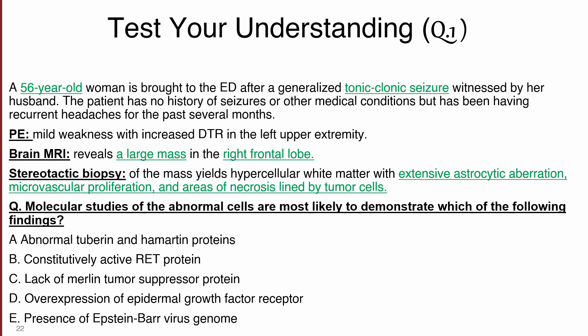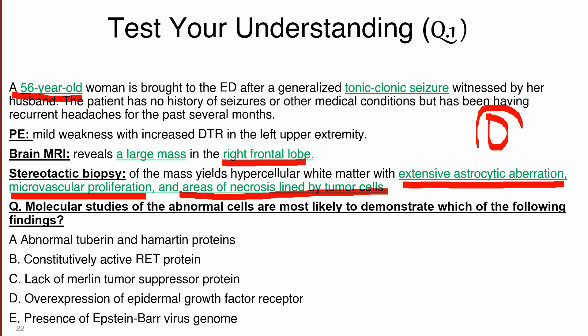Case 1: A 56-year-old woman presents with a first-time generalized tonic-clonic seizure, recurrent headaches for several months, and mild left upper extremity weakness with increased deep tendon reflexes. Brain MRI reveals a large mass in the right frontal lobe. Biopsy shows hypercellular white matter with extensive astrocytic proliferation, microvascular proliferation, and areas of necrosis lined by viable tumor cells — pseudopalisading structure — confirming glioblastoma multiforme.